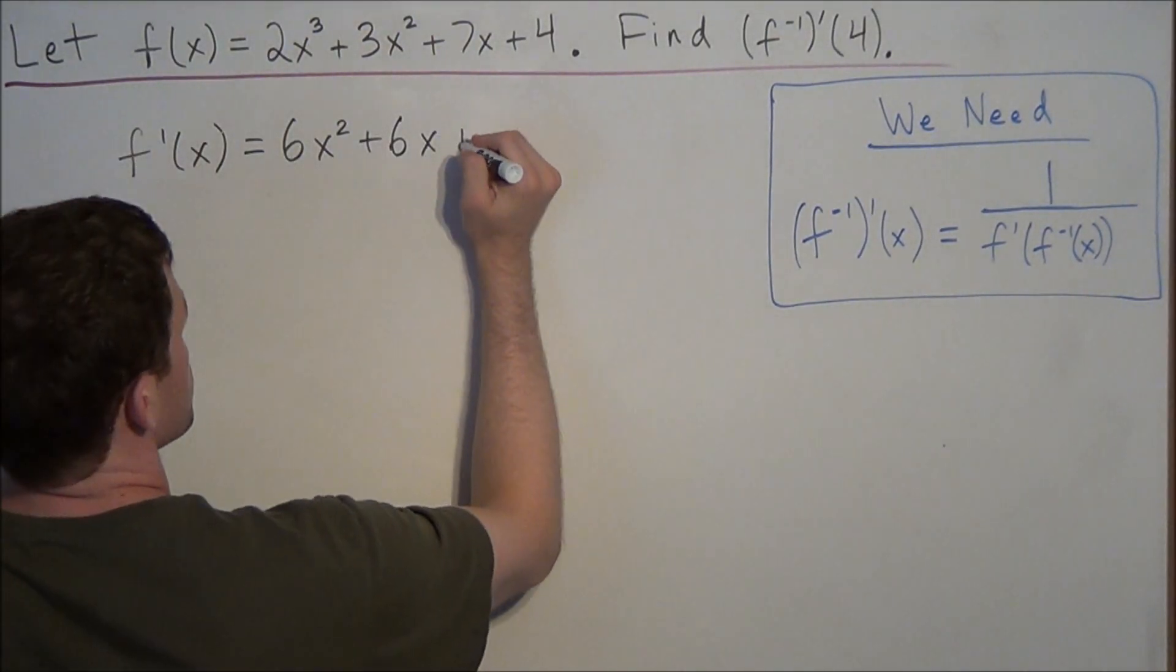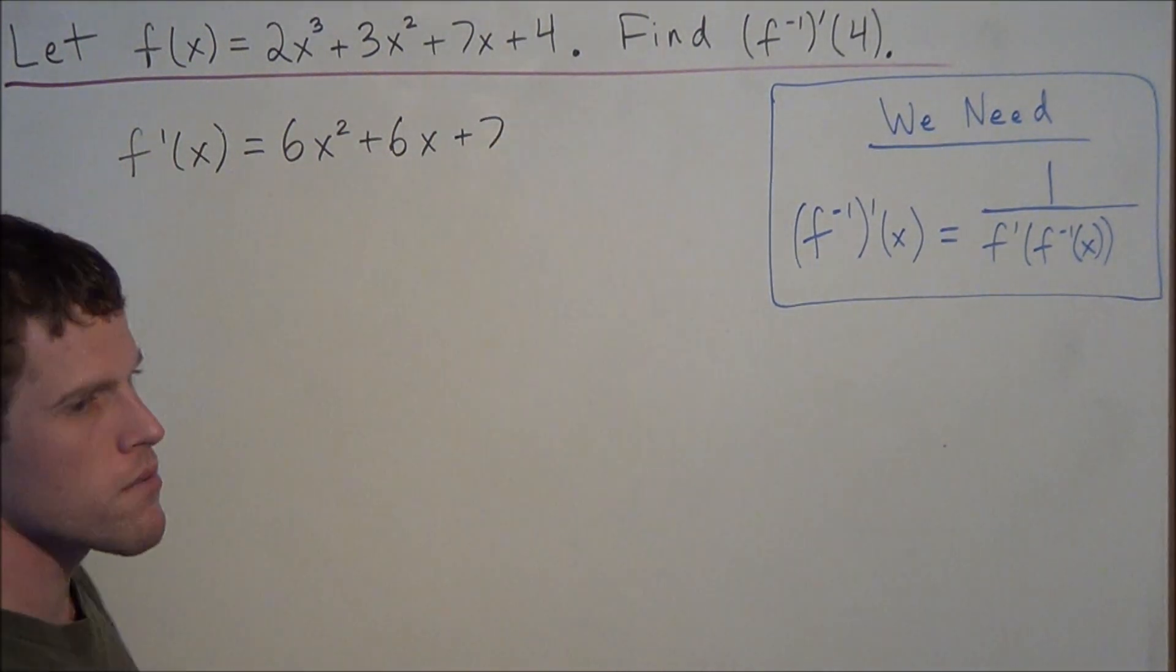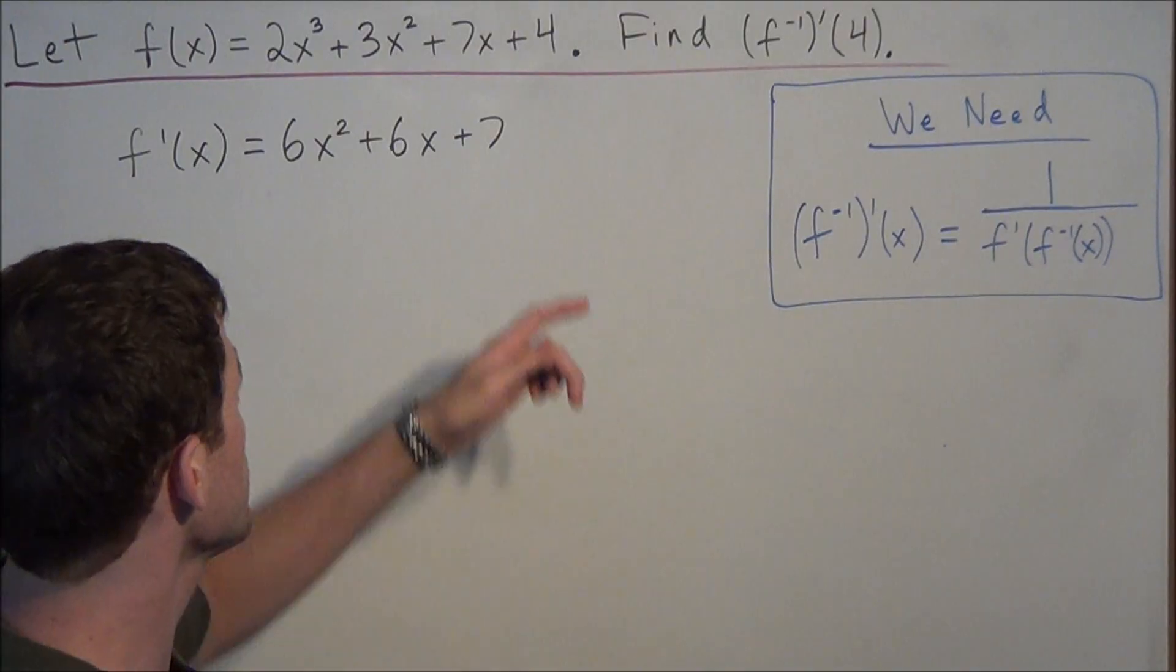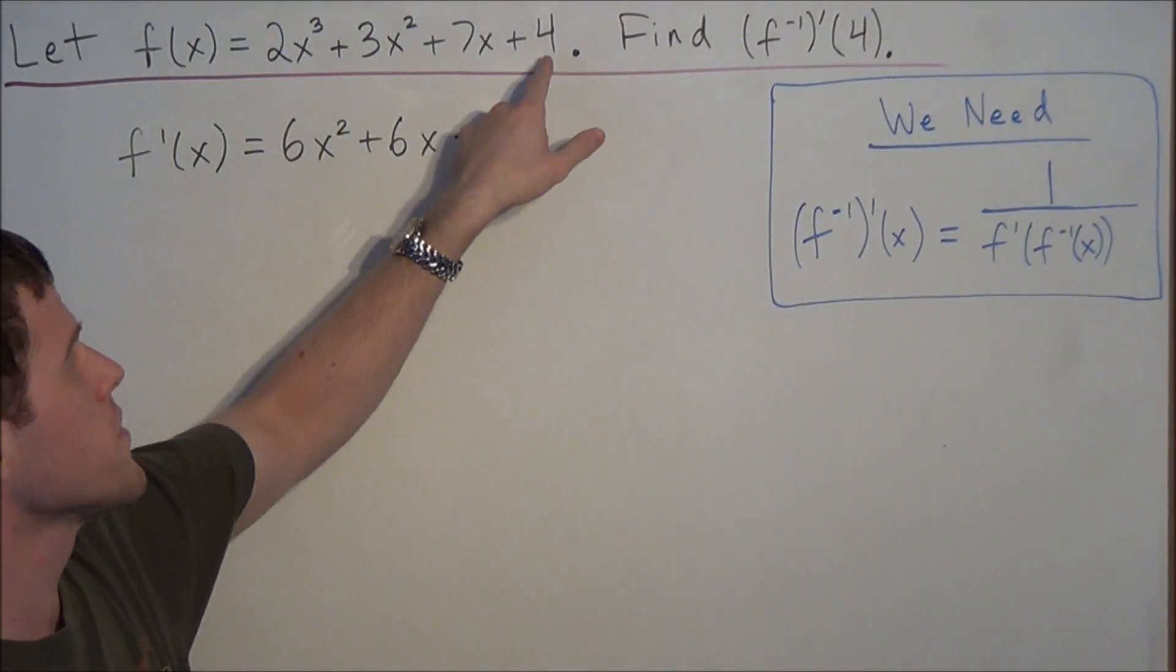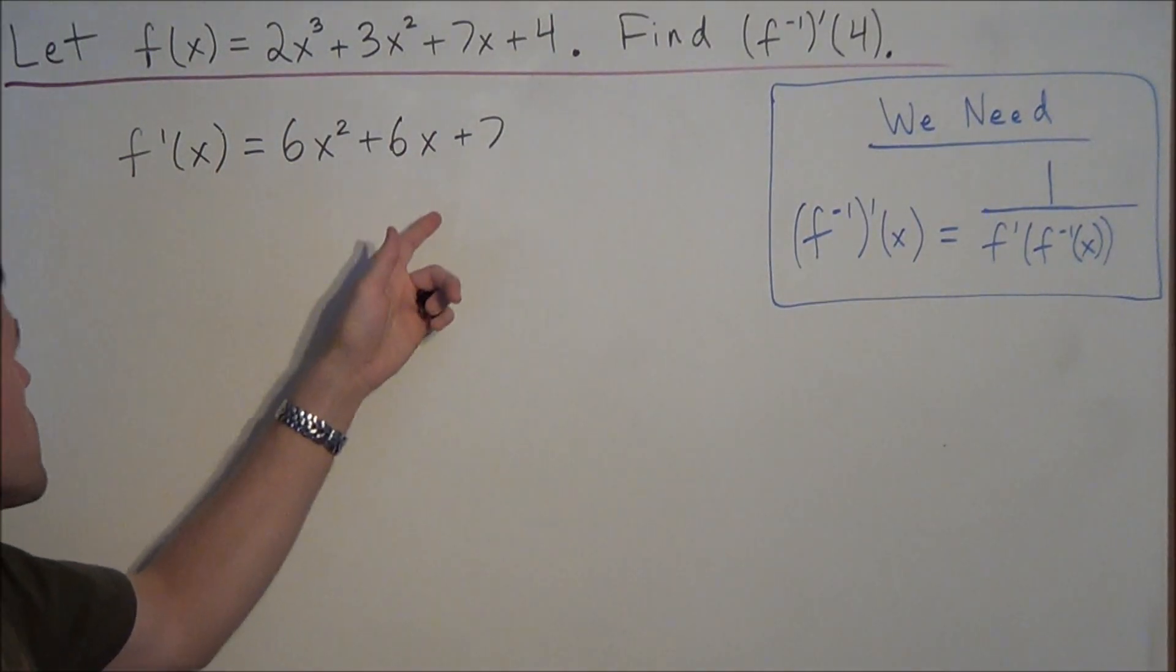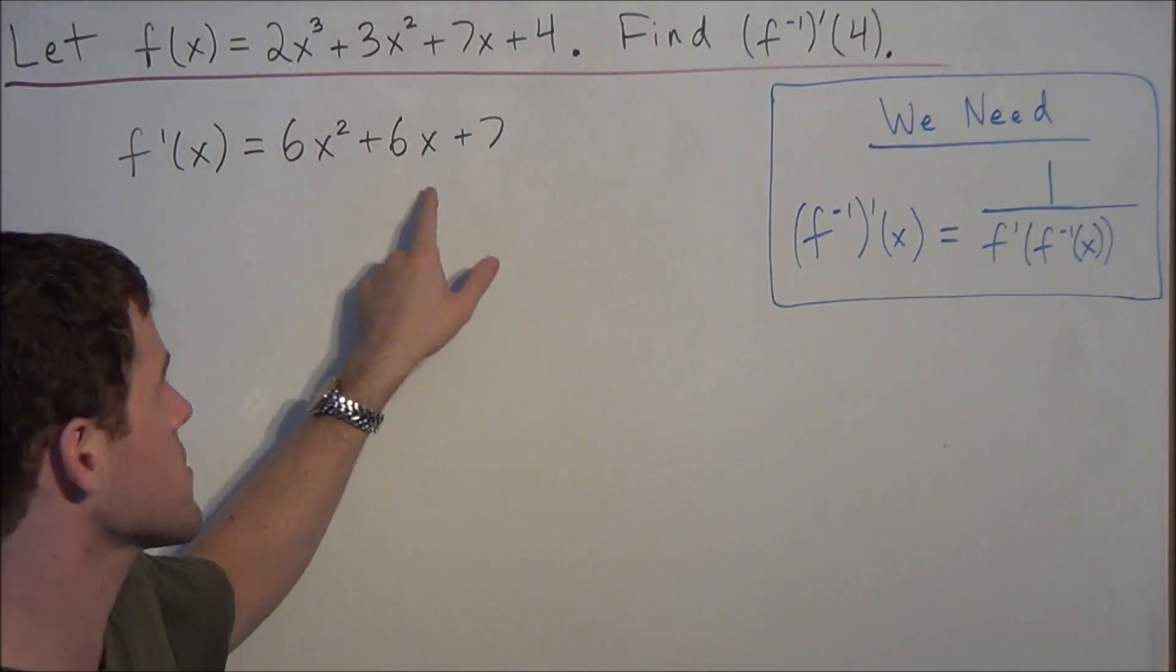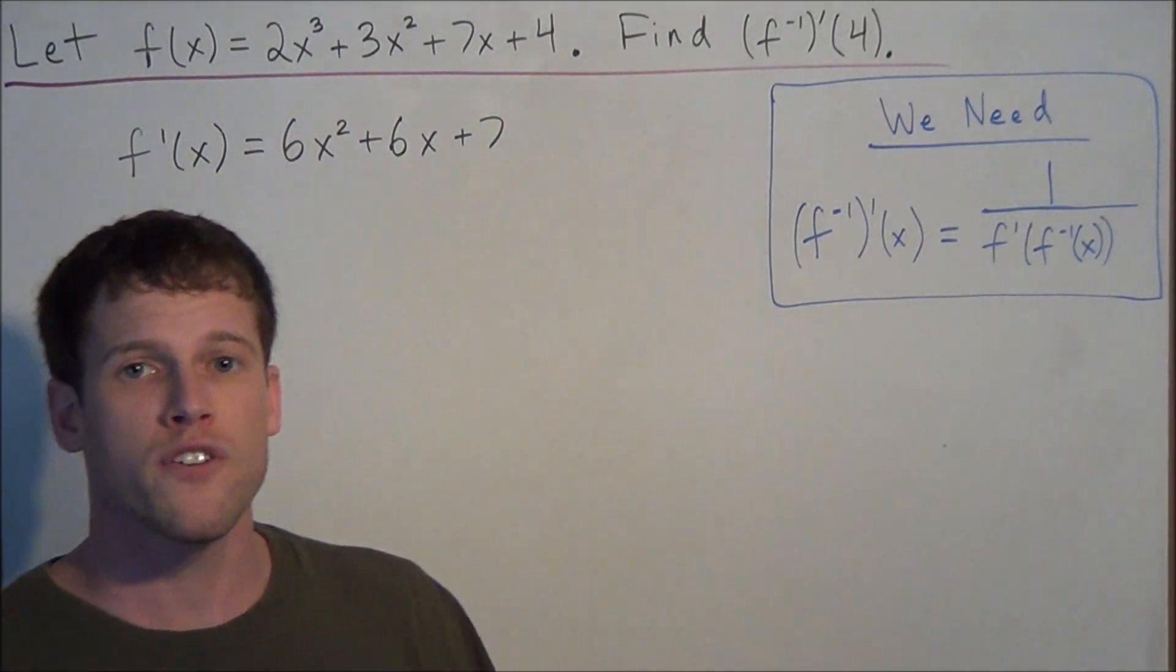And then we have plus 1 times 7 is 7, x to the 1 minus 1 is 0, so we have plus 7 on the end, and the derivative of 4 with respect to x is 0 because it's a constant term. All we did was use the power rule here. So we have f prime of x equals 6x² + 6x + 7.